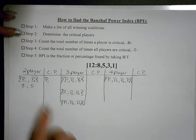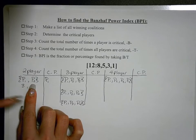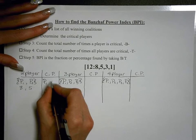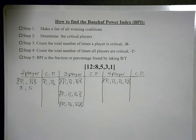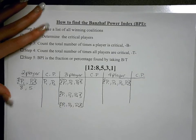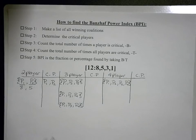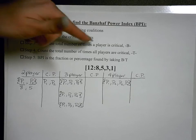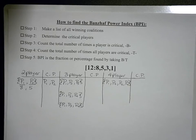Checking player two in that same two-player coalition: if player two's five votes leave, only eight remain — you need 12, so player two is also critical. In the book and MyMathLab videos, critical players are identified by underlining them in the winning coalition. I prefer a separate column to clearly identify critical players, so I don't miscount when tallying up later.